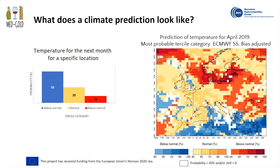For an entire region such as Europe, the prediction is a map showing the most probable temperature condition for each grid point. Below normal conditions are represented by blue colors, normal conditions by yellows, and above normal conditions by reds. If we select a point in Portugal, the blue color means that most probably below normal temperature conditions will be expected, with a probability of 58% as you can see in the plot. How these predictions are made is what I will explain next.